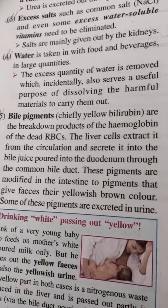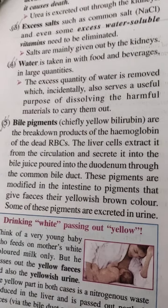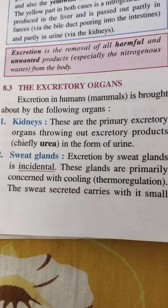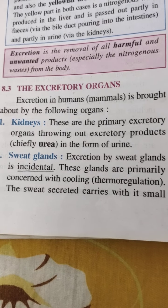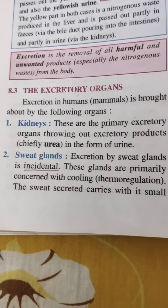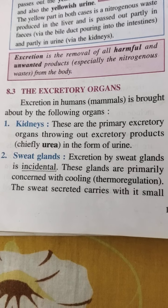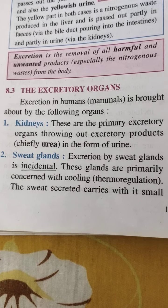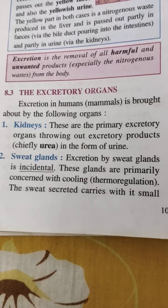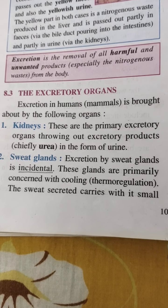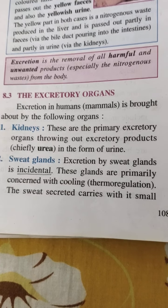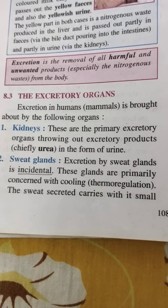So these are the substances our body must get rid of. The definition of excretion is: the removal of all harmful and unwanted products, especially nitrogenous wastes, from the body. Now, the excretory organs — the primary organs are the pair of kidneys. Sweat glands also help, as sweat contains many unrequired salts and dissolved materials, which helps maintain ionic balance.